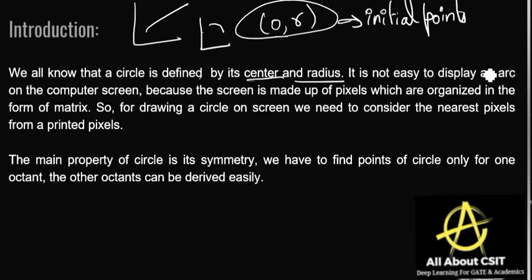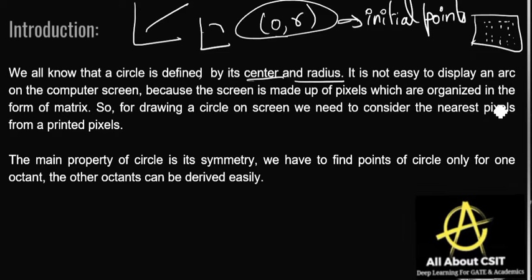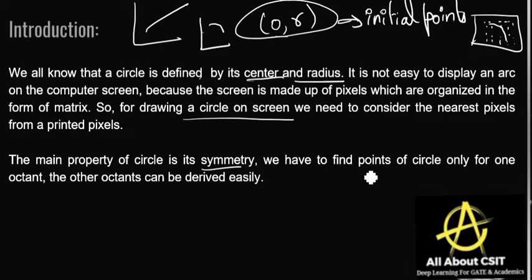It's not easy because the screen is arranged in the form of a matrix of rows and columns — the screen is made up of pixels organized in matrix form. So for drawing a circle on the screen we need to consider the nearest pixel from a plotted pixel, and find the nearest pixel to draw the arc. The main property of a circle is its symmetry. We have to find points of the circle only for one octant and the other octants can be derived easily.